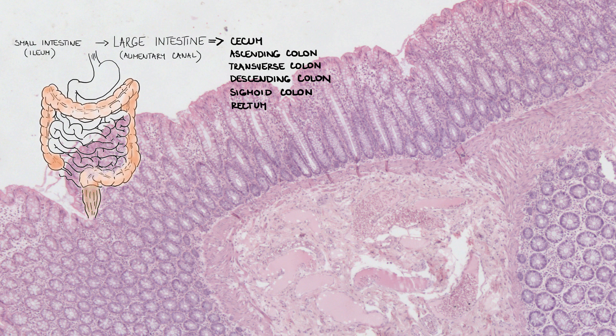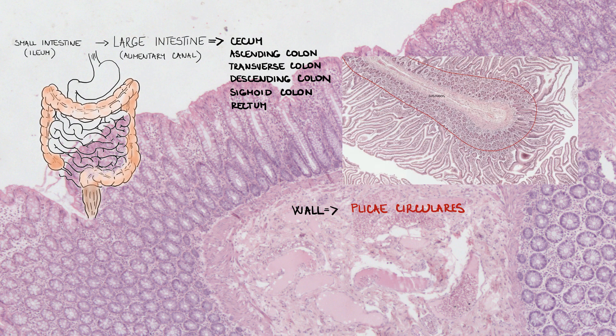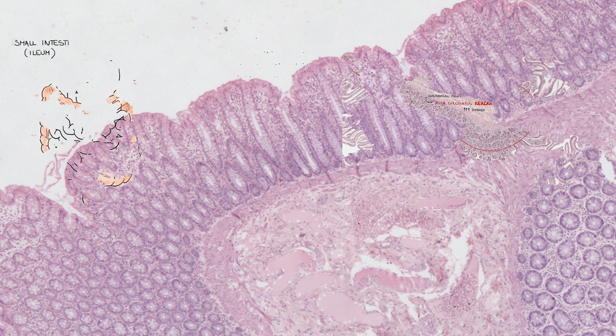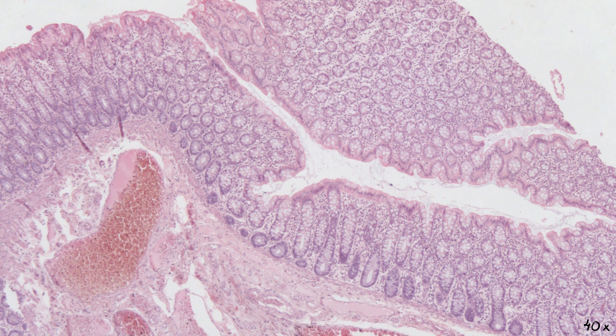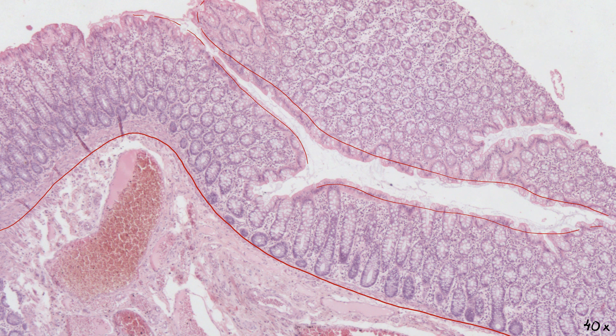The wall structure of the large intestine is basically the same as in the small intestine, but there are some differences. Its wall doesn't form permanent folds — plicae circulares — which are clearly visible in the small intestine. Nevertheless, as a result of contraction of the muscular layer, the inner part of the large intestine can be folded, but it's not a permanent state.